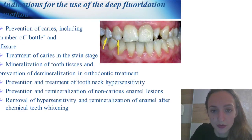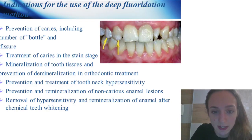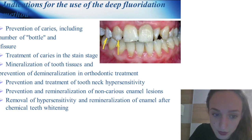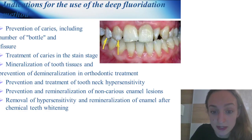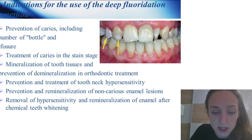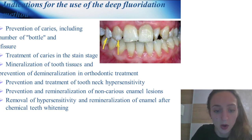Indications for the use of deep fluoridation: white spots on teeth, prevention of caries including bottle caries and fissure caries, treatment of caries in the stain stage, mineralization of tooth tissue, prevention of demineralization in orthodontic treatment, prevention and treatment of tooth neck hypersensitivity, and prevention and remineralization of non-carious enamel lesions, including removal of hypersensitivity after chemical teeth whitening.